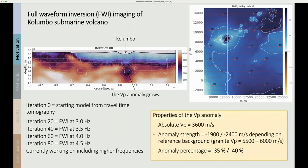But let's have a look at the properties of this low Vp anomaly. The absolute Vp at the center of the anomaly is 3600 meters per second and this is a really low velocity. The strength of that anomaly is minus 1900 to minus 2400 meters per second depending on what we choose as a reference background. So the Vp for granite is between 5500 and 6000 meters per second and this gives us a percentage anomaly of minus 35 to minus 40 percent. This is a very significant Vp anomaly.